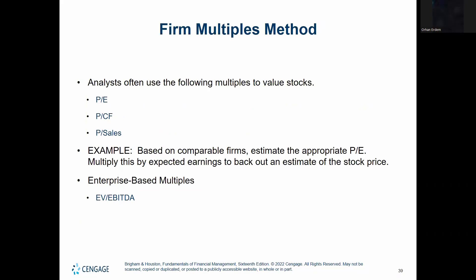The third method is called the firm multiples method. It is an evaluation theory based on the idea that similar companies should be valued at similar prices. This method assumes that ratios such as operating margins or the price-to-earnings (P/E) ratio are the same across similar firms. This method is not covered in detail in the book, so this overview should be sufficient. That concludes chapter nine — I hope you enjoyed the chapter and I'll see you in the next video.